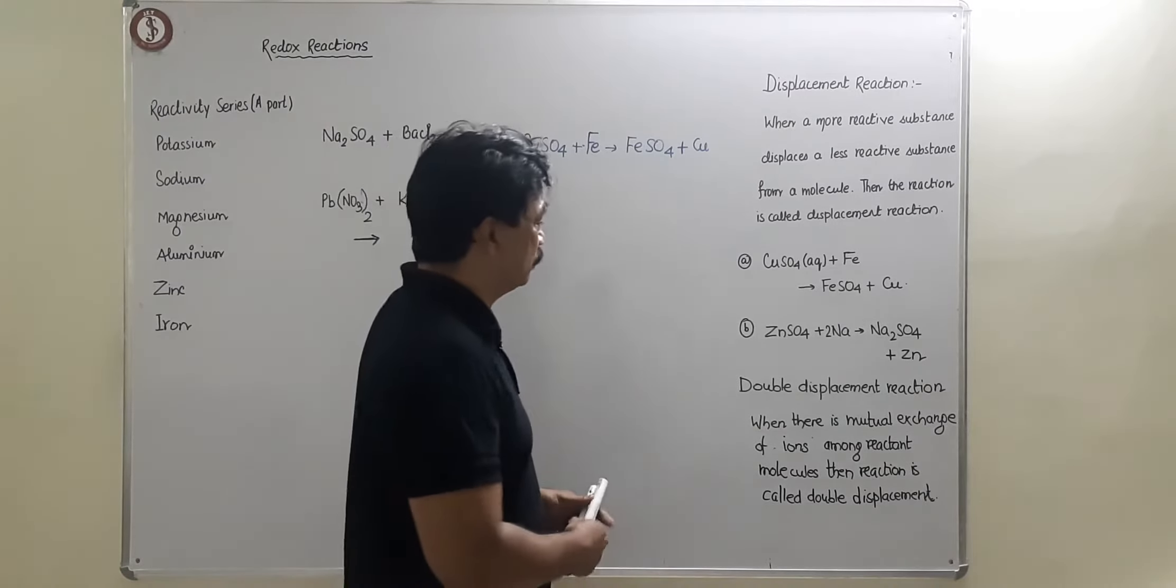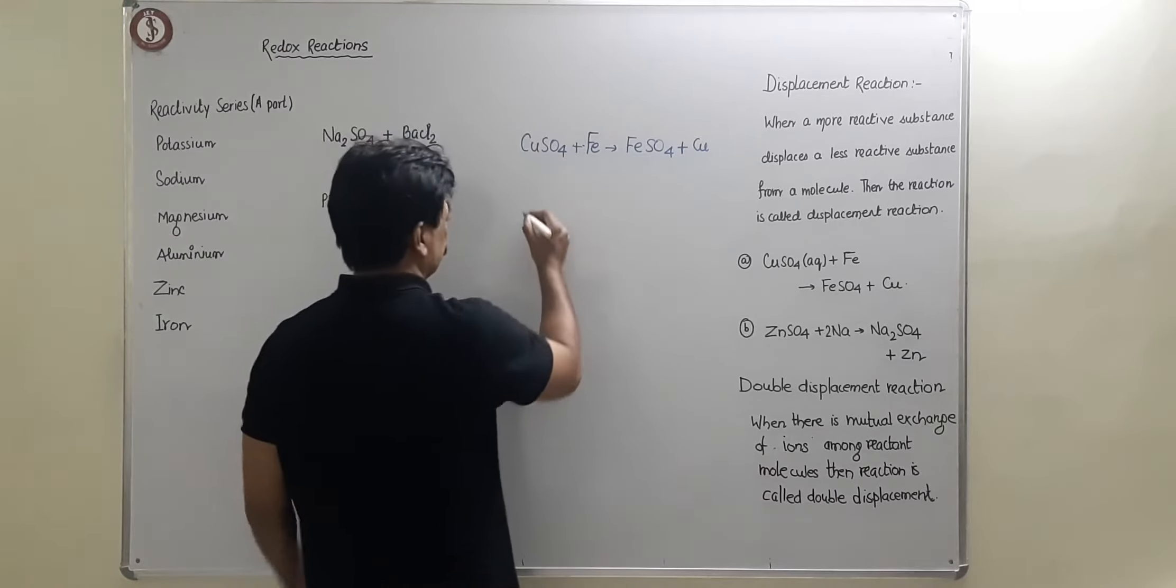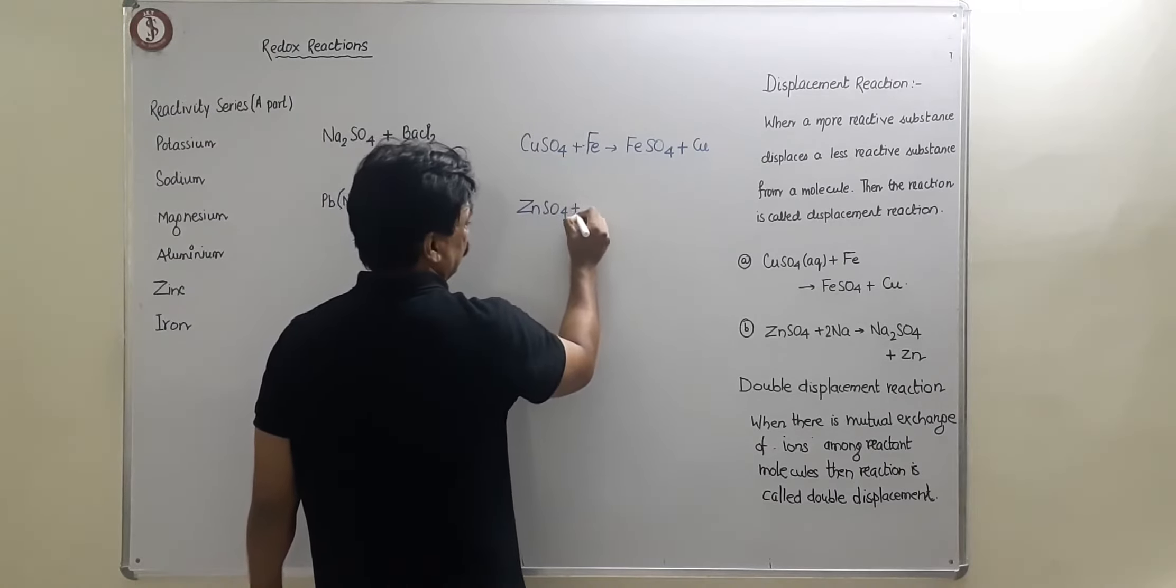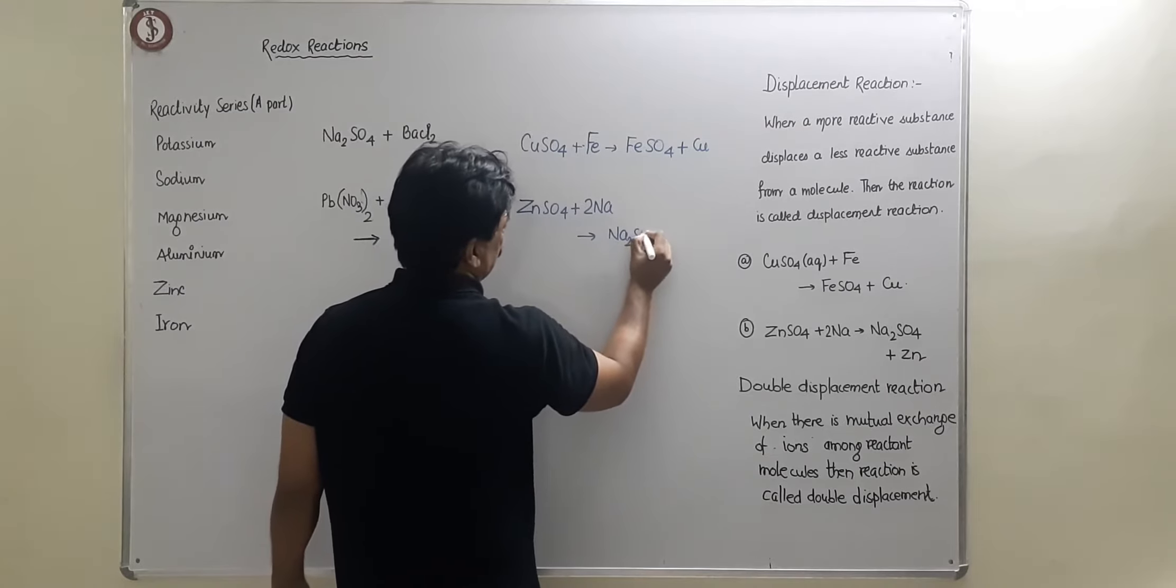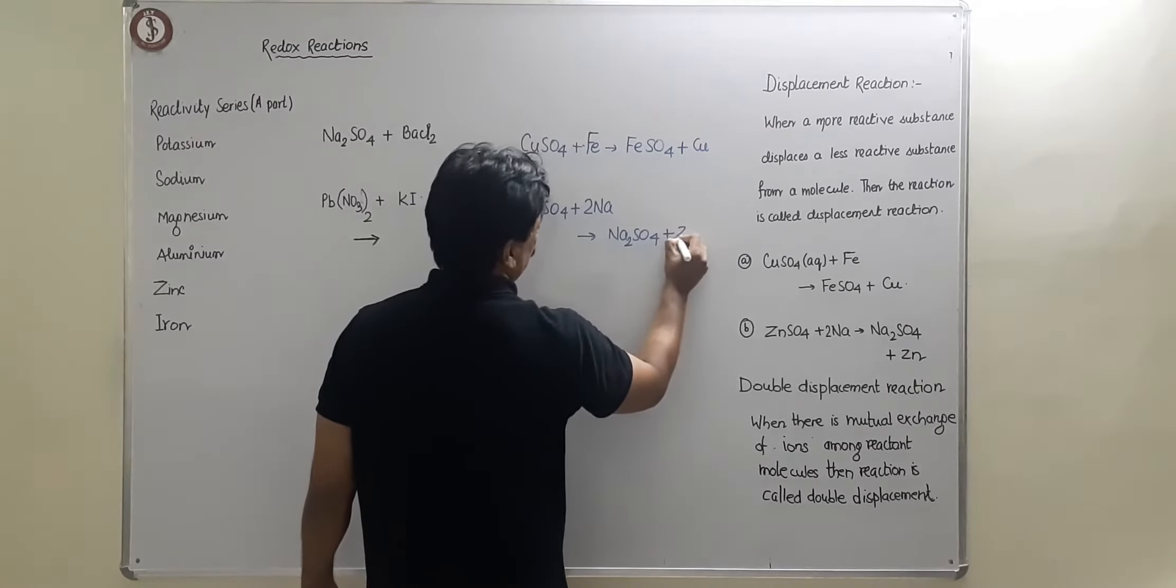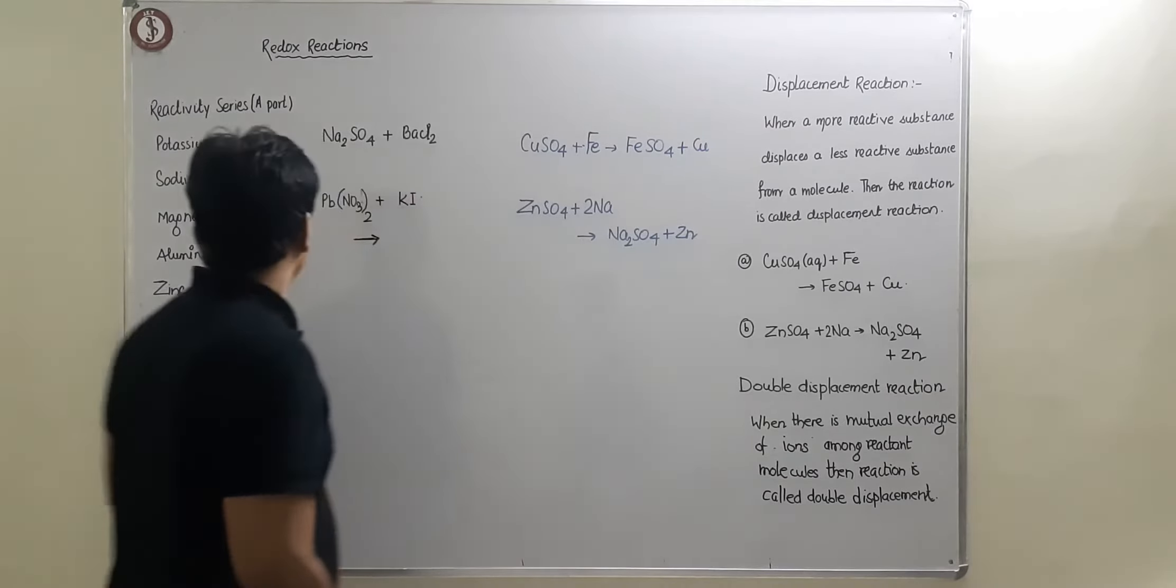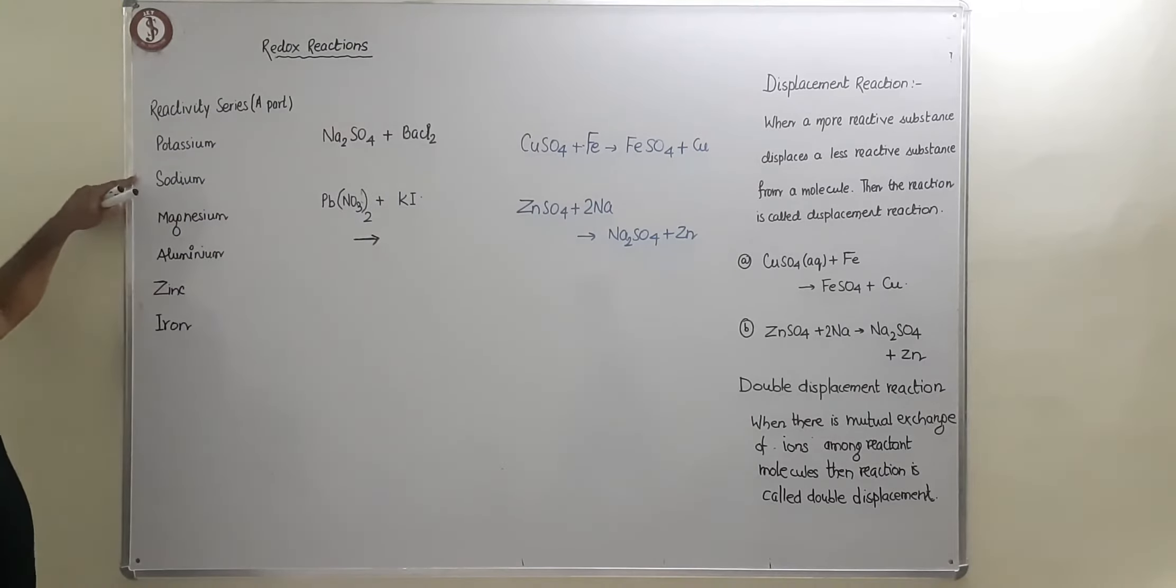Similarly, if you see zinc sulfate reacting with sodium, suppose it is reacting and you are getting Na2SO4 plus zinc. So who is reactive? Sodium is very high on the reactive series and zinc is lower. So sodium will replace zinc.